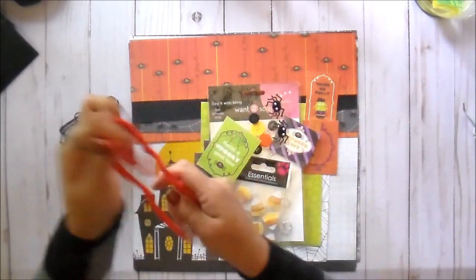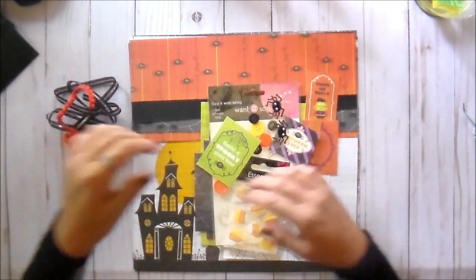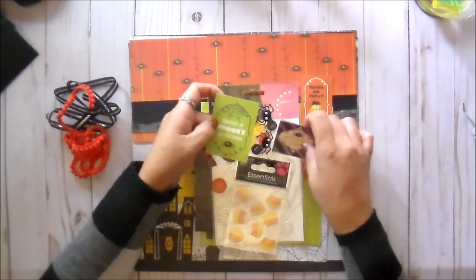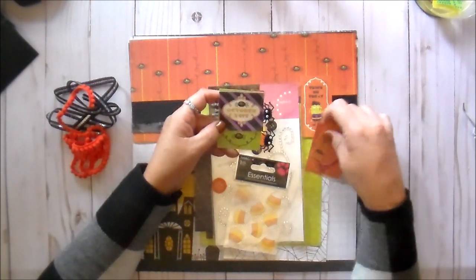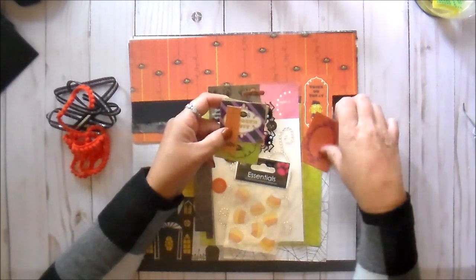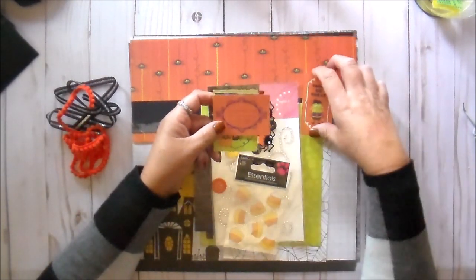I don't know how to describe this—it's got little balls on it. Then I put in these little tags: 'have a spooky good time,' a little October 31st spider journaling tag, and 'trick or treat.'